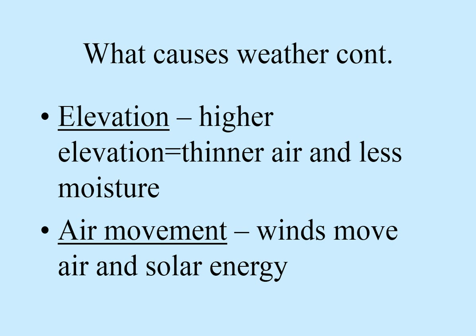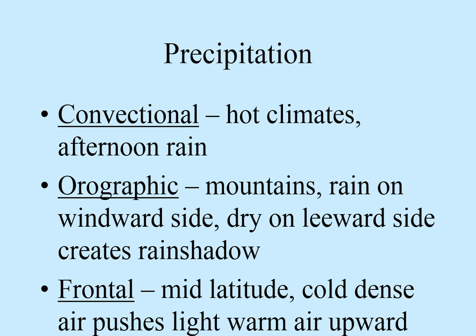More causes of weather: elevation — the higher the elevation, the thinner the air and less moisture, and also the colder the temperature. Air movement: winds are moving air and solar energy around, which obviously has an effect on weather. There are three types of precipitation: convectional, orographic, and frontal. Convectional is when it's hot all day and you suddenly have afternoon showers break out. Orographic involves mountains as a big barrier — on the windward side you'll have lots of green vegetation and rain, but on the leeward side it's very dry. The rain comes in, hits one side, dumps out, and as the clouds go over the other side there's no more precipitation — that's called a rain shadow.